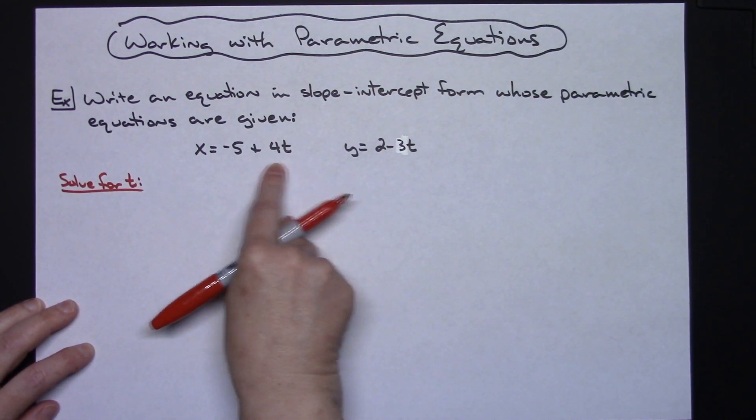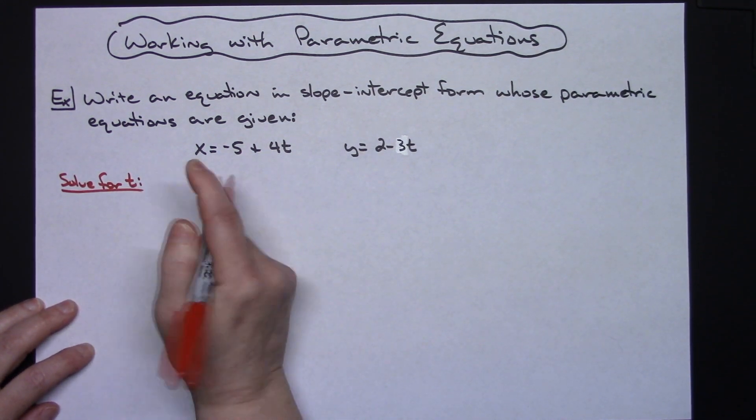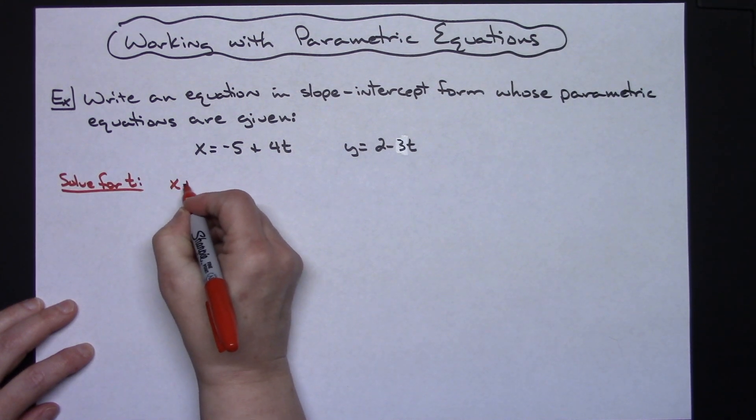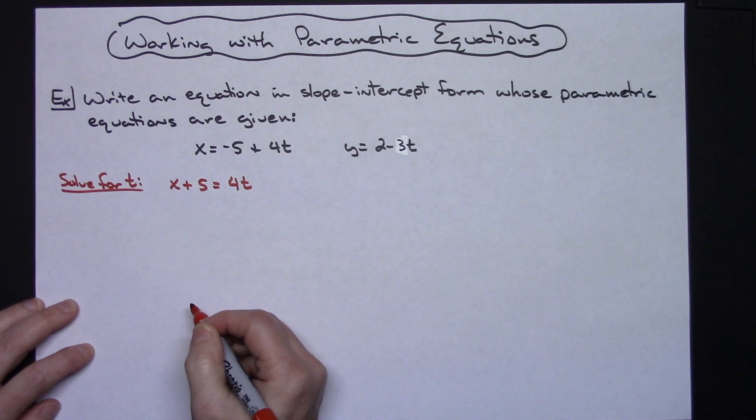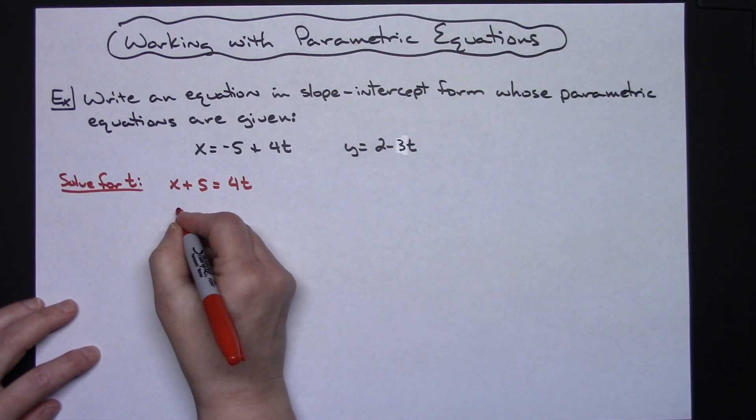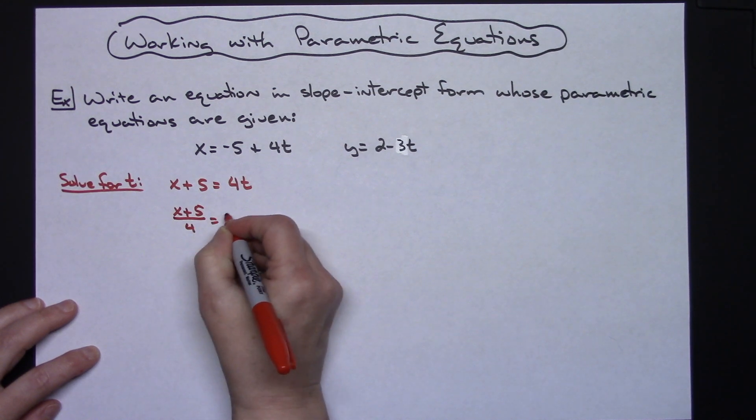I'm going to take this first equation and add 5 to both sides. So I'll have x + 5 = 4t, and if I divide both sides by 4, I'll have (x + 5)/4 = t.